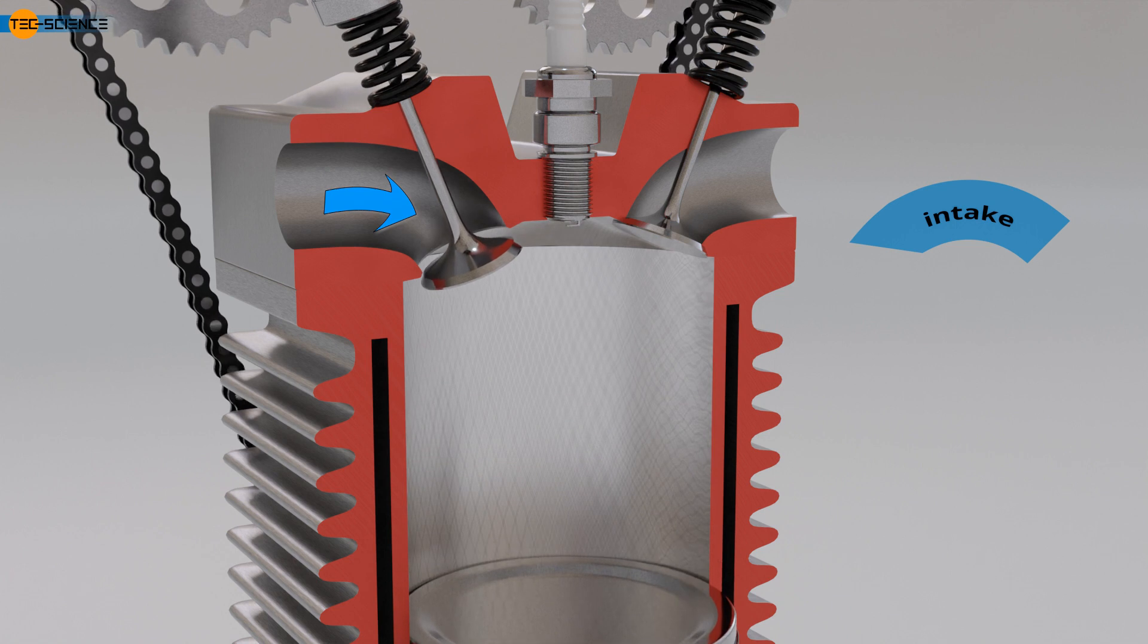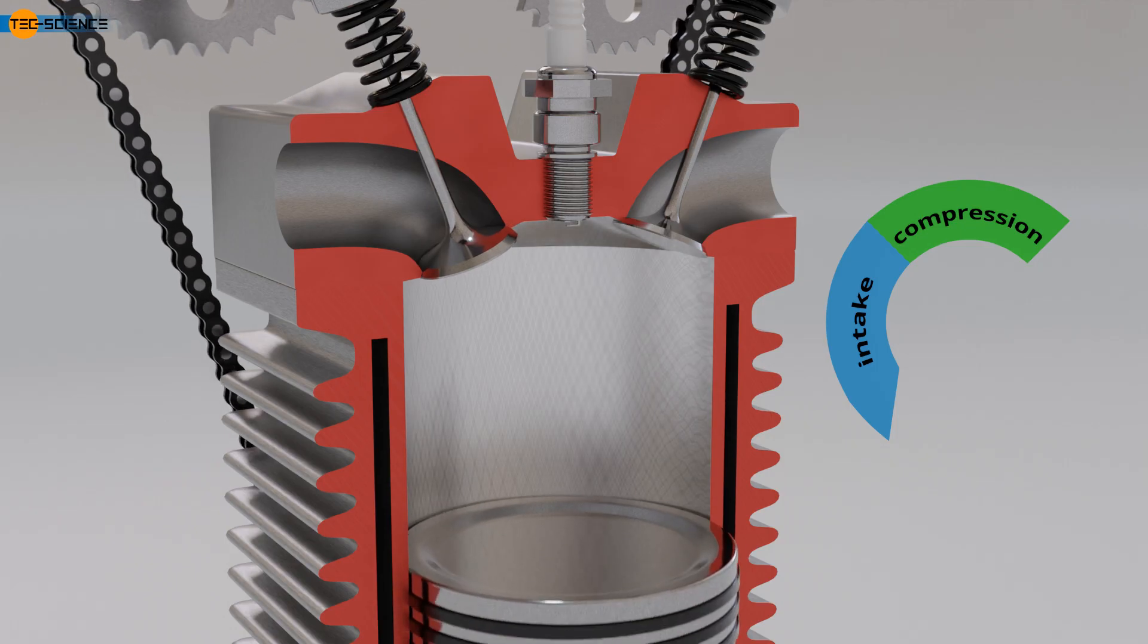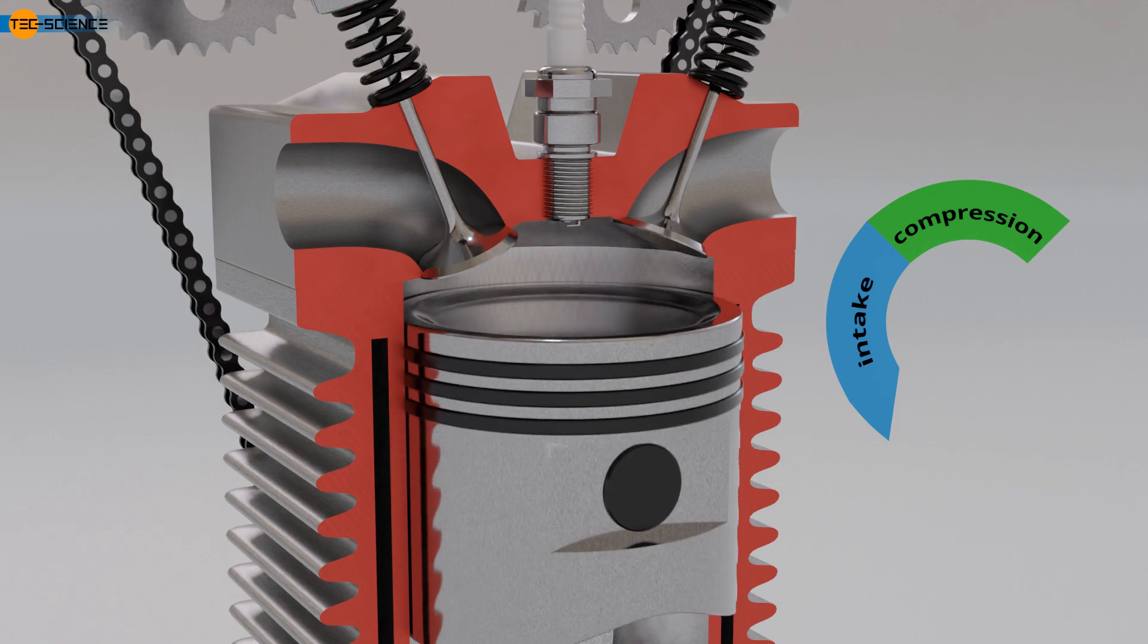When the piston reaches the bottom of its stroke, the intake valve closes, and the second stroke, known as the compression stroke, begins. The position of the piston at the lowest point, and thus at the largest cylinder volume, is called the bottom dead center. After reaching this bottom dead center, the air-fuel mixture is compressed by the upward movement of the piston with the valves closed. At the top dead center, the cylinder volume is at its smallest, and the gas inside is thus maximally compressed.